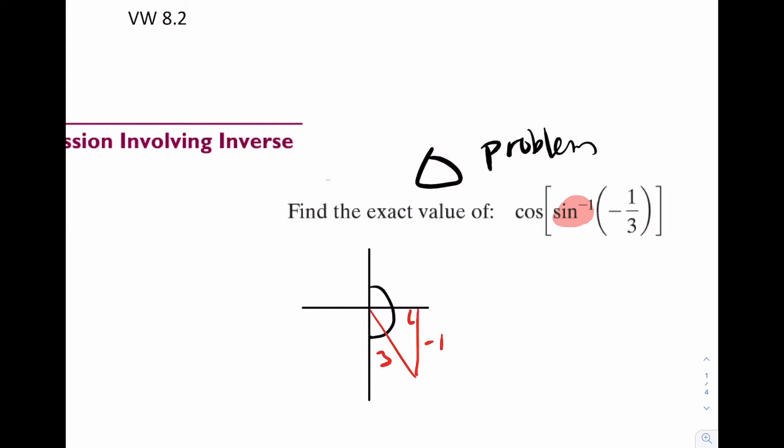So write negative one and three. Again, do the Pythagorean theorem in your head. This should be two root two. There's our theta. Now write cosine of theta. That's A over H. Two root two over three. No problem.